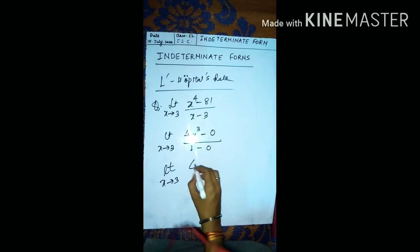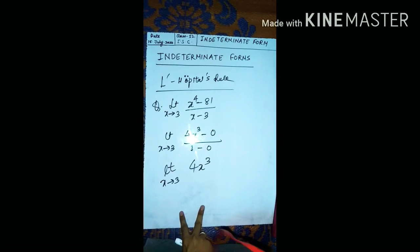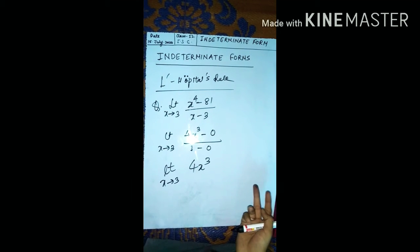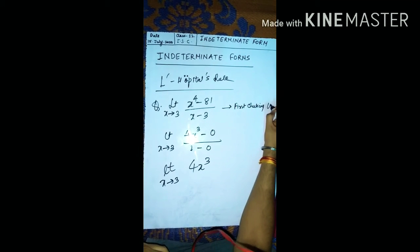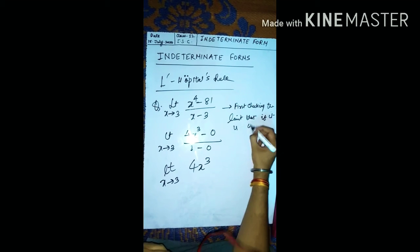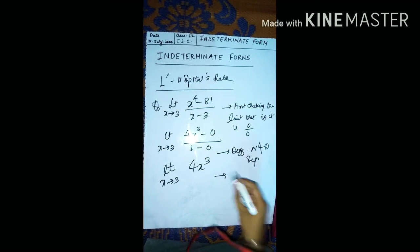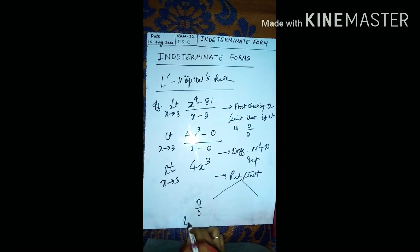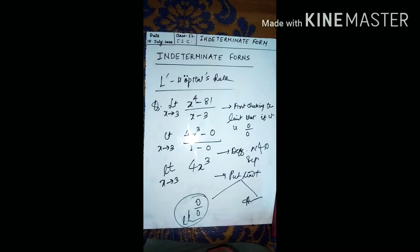You are left with 4x cubed. Now just put x tends to 3. Are you getting 0 by 0 form? If yes, again use L'Hôpital's rule. If no, put the value and get the answer. The algorithm is: first check if the limit gives 0 by 0; if yes, differentiate numerator and denominator separately; then put the limits again. If you again get 0 by 0, use L'Hôpital again. If not, that is your final answer.